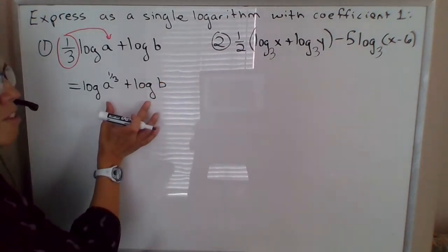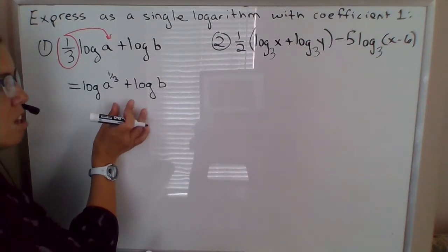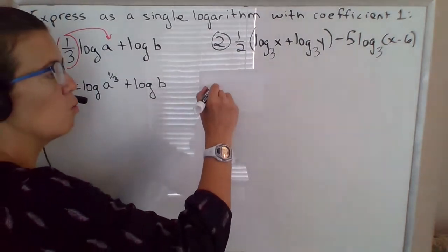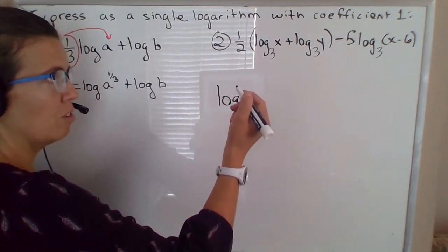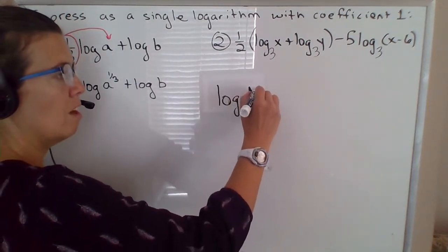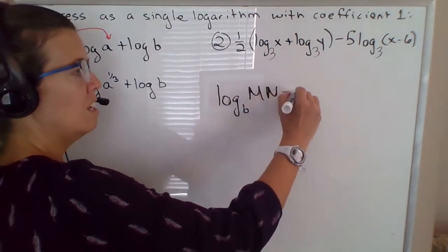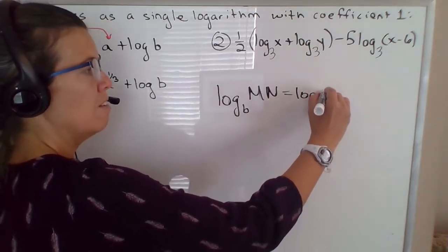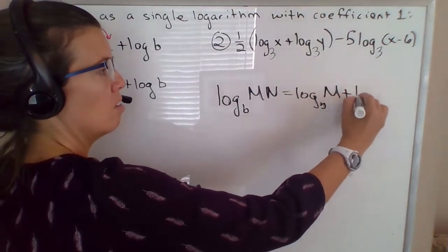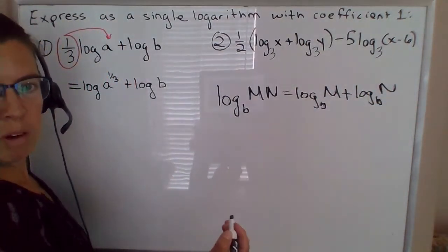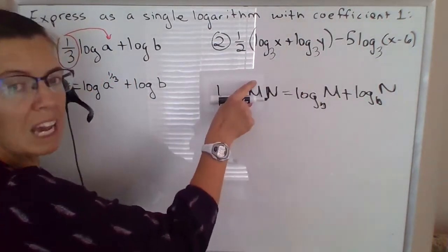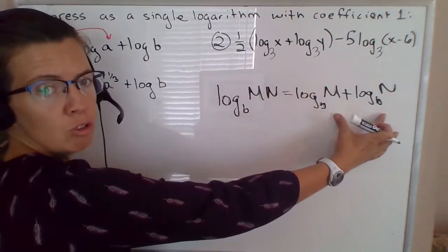Now remember that when you have the sum of two logarithms, you can push those together. So the way I've written this property of logs previously, I would write log base b of m times n equals log base b of m plus log base b of n. And so in the previous examples we would go this direction. We have log of a product, we break it up into two separate logarithms.